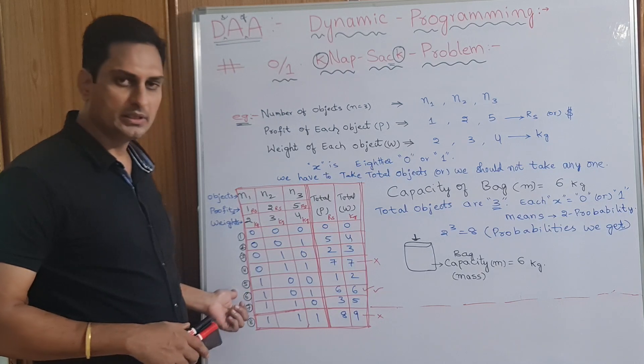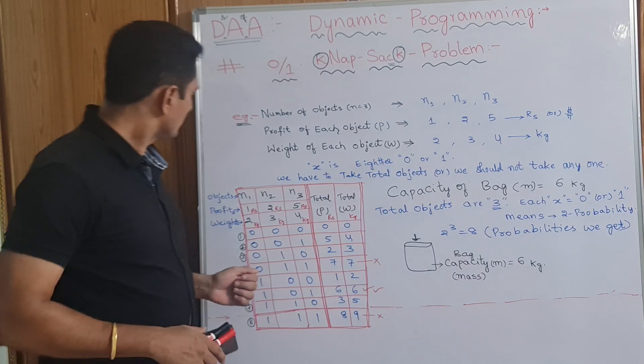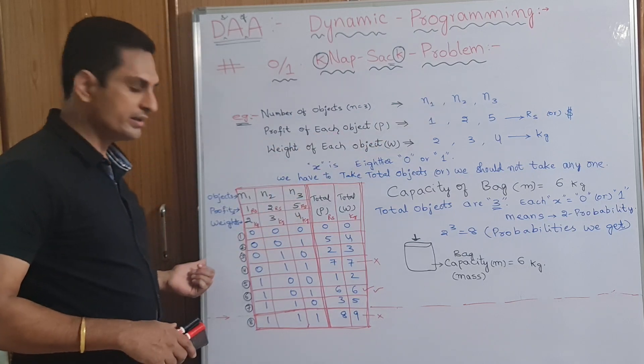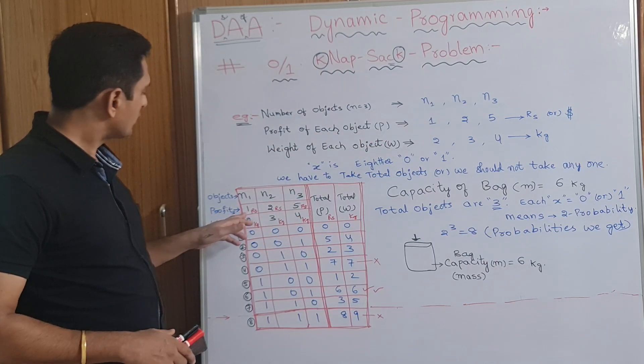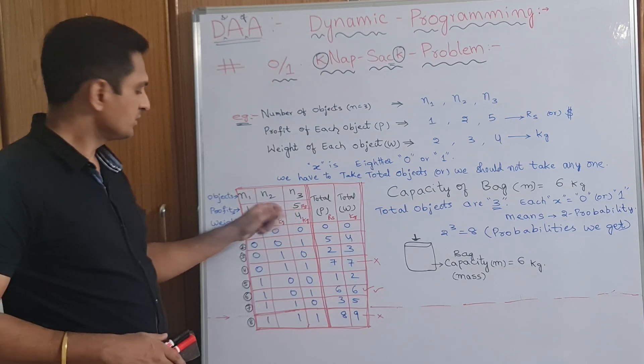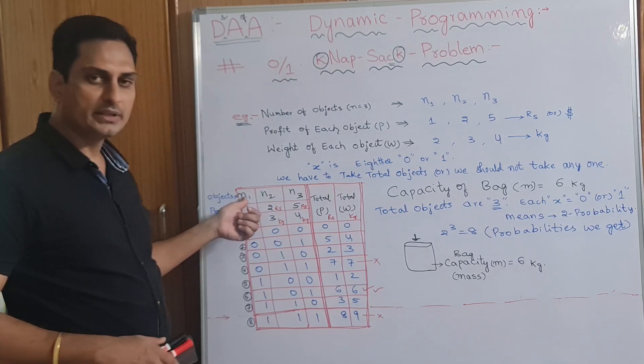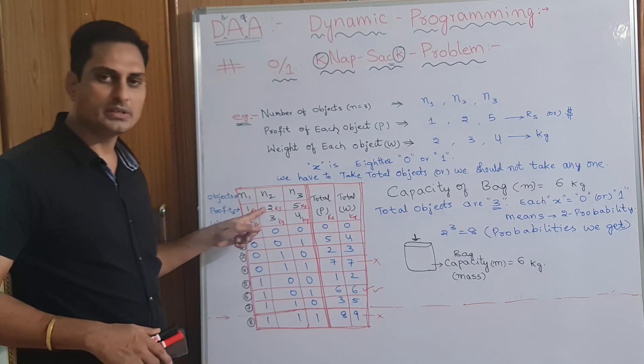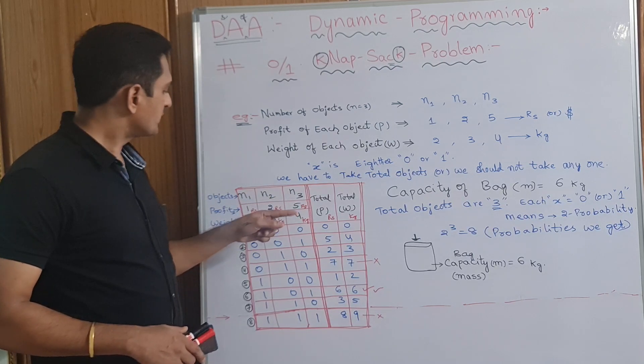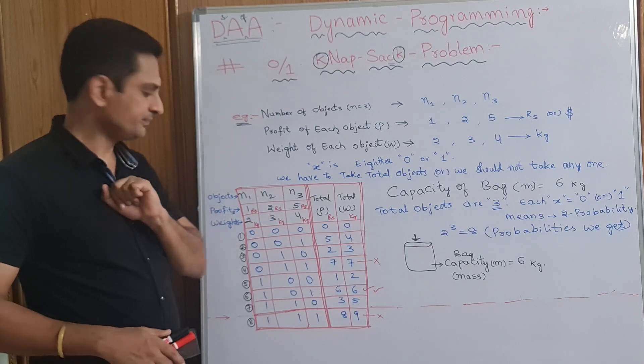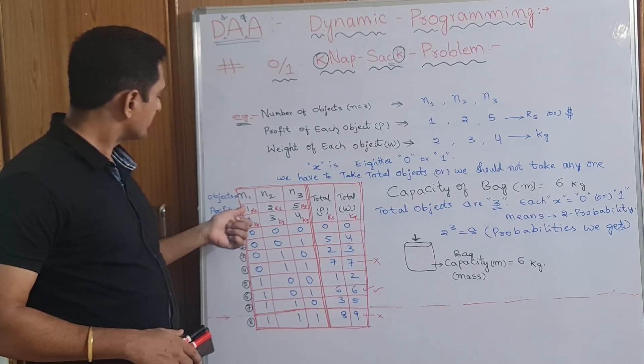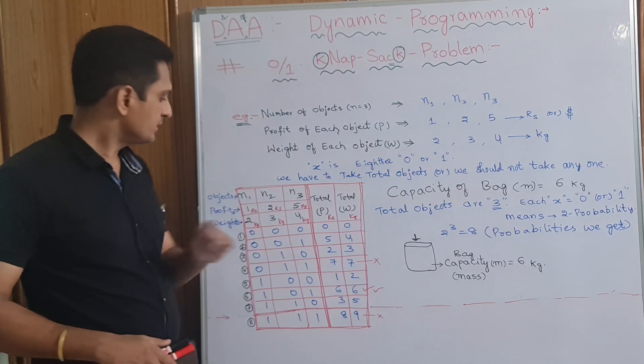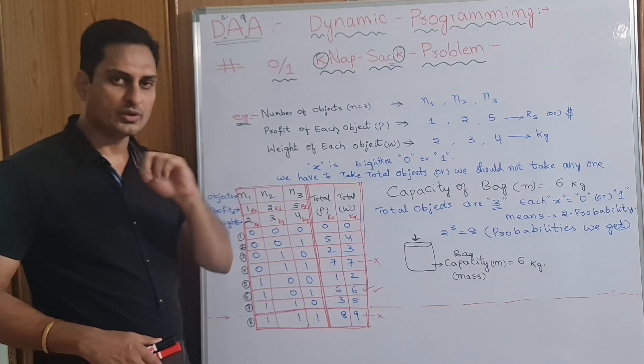Here, objects N1, N2, N3. Same drawn here. Profits 1 rupees, 2 rupees, 5 rupees. N1, first object profit is 1 rupees, second object profit is 2 rupees, third object profit is 5 rupees. Weights. First object weight is 2 kgs, second object weight is 3 kgs, third object weight is 4 kgs.